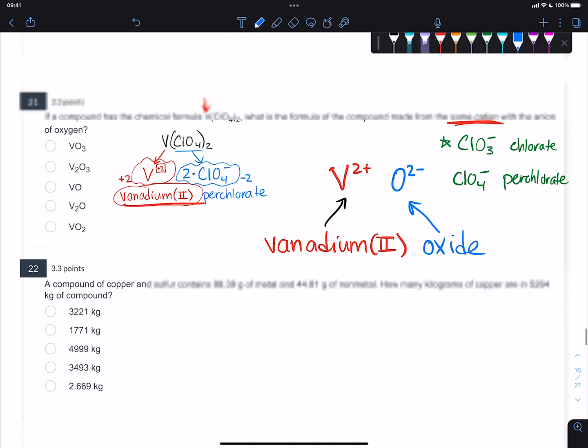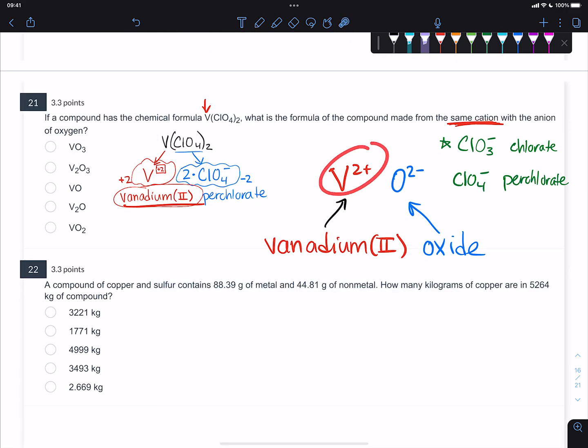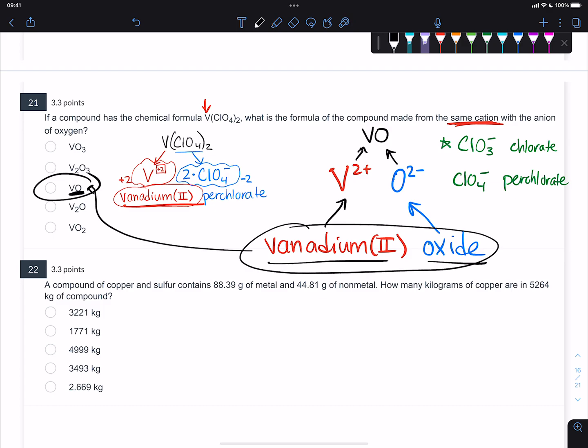So back to here. We have a 2+ and a 2-, two plus and two minus are already equal and opposite, so it turns out that you just kind of stick them together and what you get is just VO. This compound is vanadium(II) oxide. I want people to recognize that there is no two in the formula for this compound, but the name of the formula is called vanadium(II) oxide. So be very comfortable going from formula to name and from name to formula—that's going to take practice.